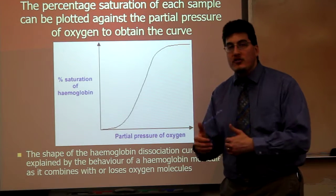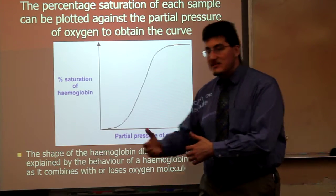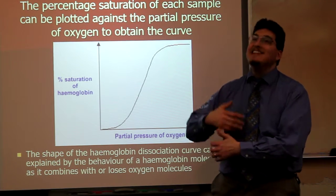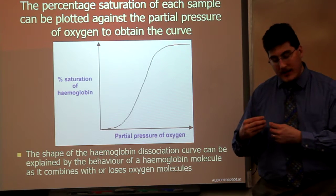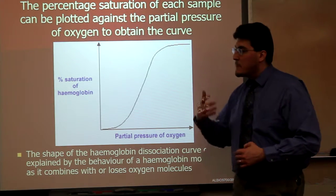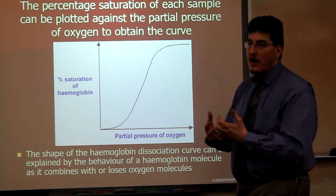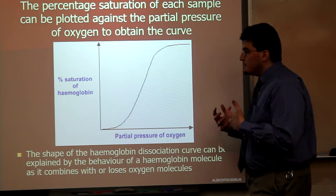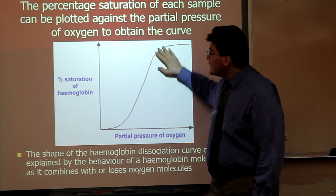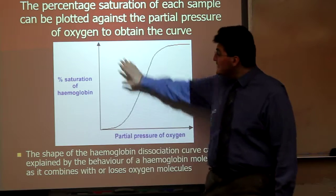The binding of the first oxygen makes it easier to bind the next, which makes it easier to bind the next. It is easier to take oxygen off of hemoglobin the second or third time than it is the first or fourth time. That's what this S-shaped curve means.